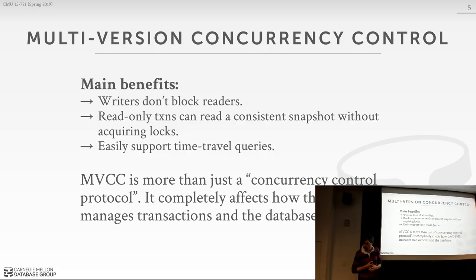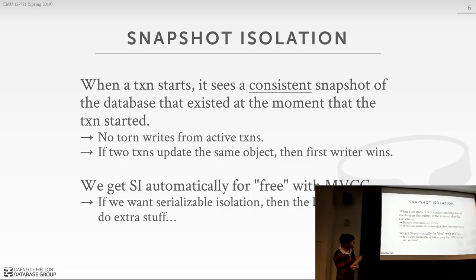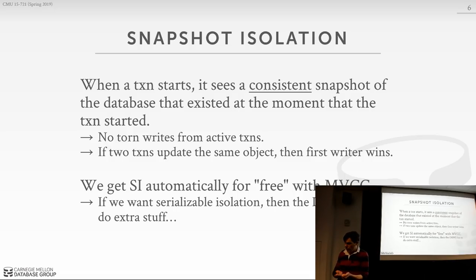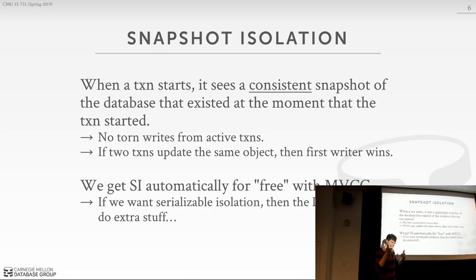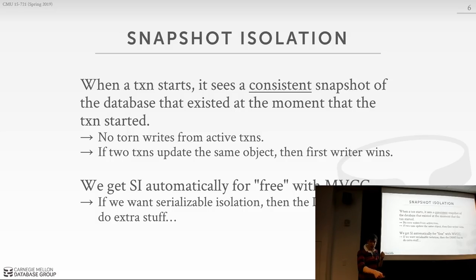At a high level, we should understand what's going on with snapshot isolation, because that's really important here. When a transaction starts, it's going to have access to a consistent snapshot of the database that existed at the time it started. 'Consistent' means that even though other transactions may be running at the moment we started and may have modified the database, we will not see their changes because those transactions had not committed at the moment our transaction started. A consistent snapshot means we only see changes from transactions that committed before we started.